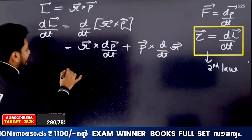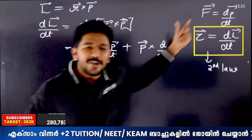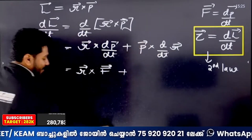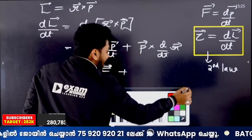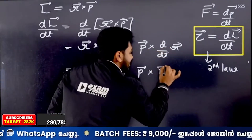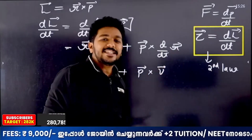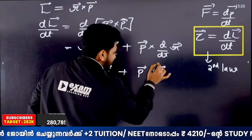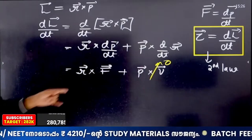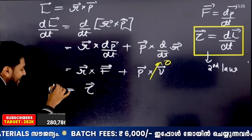Now, what is r cross dp by dt? dp by dt is force, so that gives r cross f. And what is dR by dt? dR by dt means velocity — rate of change of position means velocity. So the second term is p cross v, which equals 0.